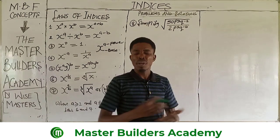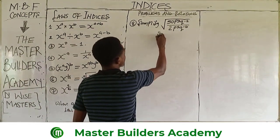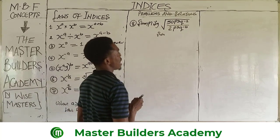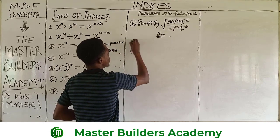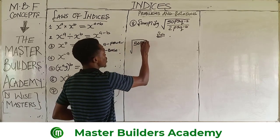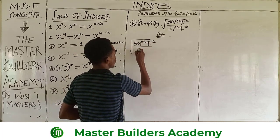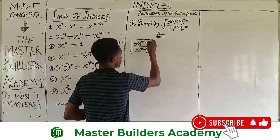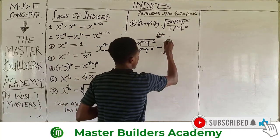Now let's look at another question. We are asked to simplify the square root of 50p cubed q raised to power negative 2, all over 2p raised to power 5 q raised to power 8. We have: square root of 50p³q⁻² all over 2p⁵q⁸. The first thing to do is to separate the numbers from the letters according to their likeness.